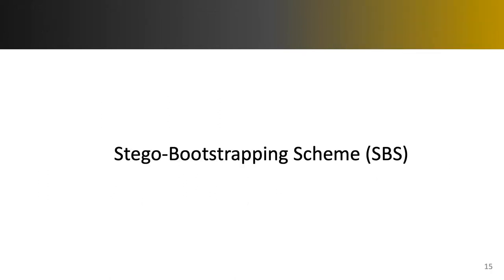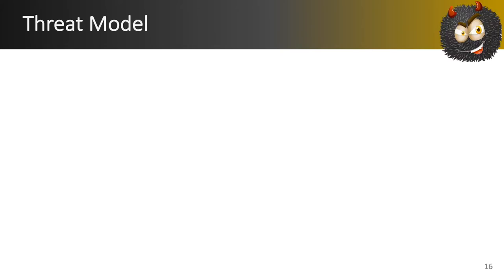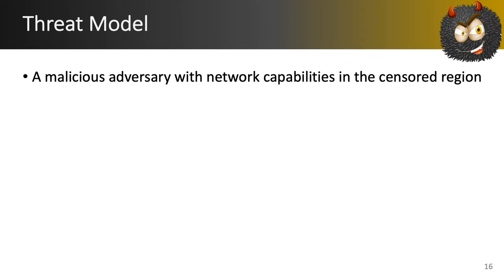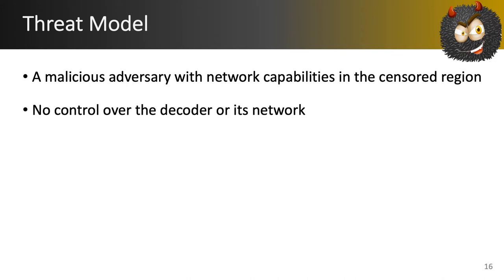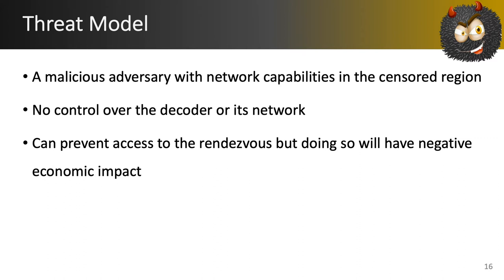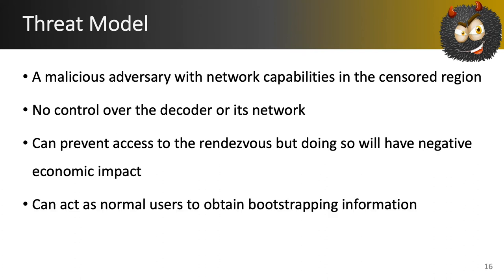Let's start with the stego bootstrapping scheme. But before that, let's look at the threat model of the censor, which we adapted from prior work in the censorship domain. We consider a malicious adversary with network capabilities in the censored region; however, it has no control over the decoder or its network. Further, the adversary can prevent access to the rendezvous, but doing so will have a negative economic impact, since many digital assets are currently being transferred to and from censored regions. Finally, we consider that the adversary can act as a normal user to also obtain bootstrapping information.